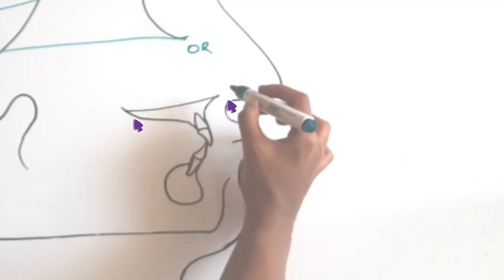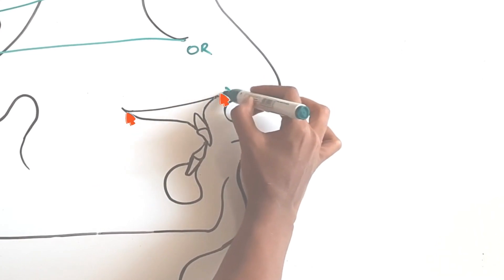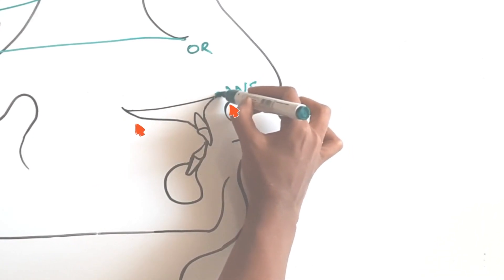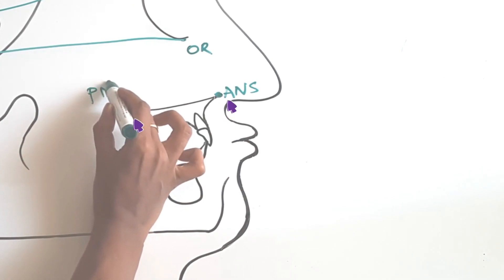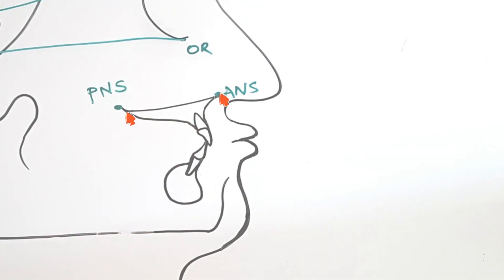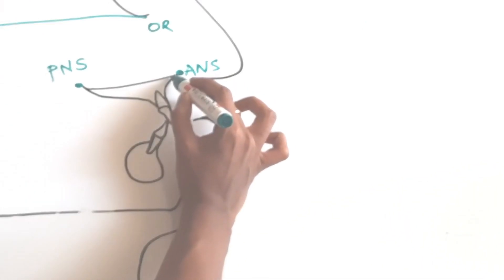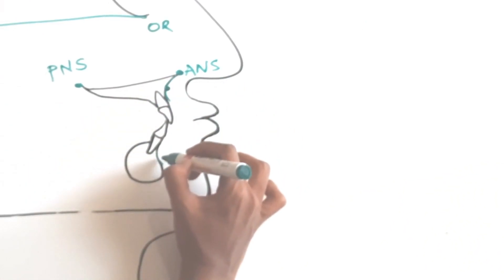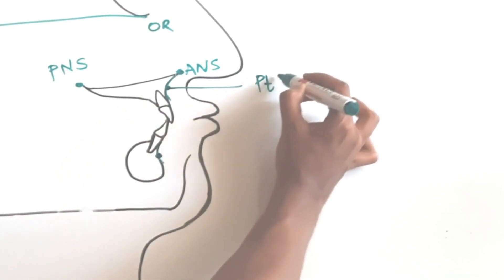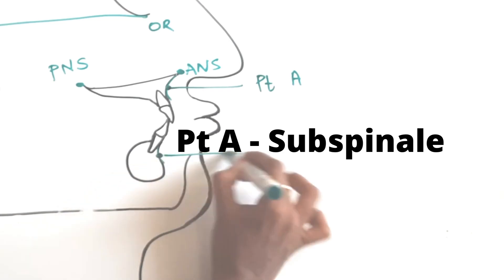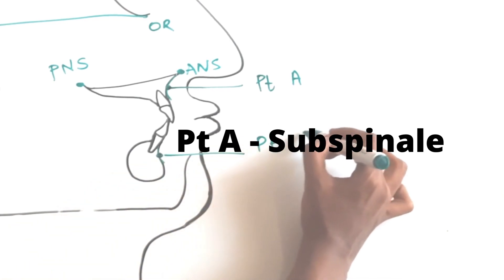The two pokey spines near the nose is called the anterior nasal spine, ANS, and the one behind is the posterior nasal spine. ANS is the anterior most point of the maxilla. The deepest point between the ANS and the inferior point of the maxillary alveolar process is called point A. It is also called subspinal because it's under the spines.